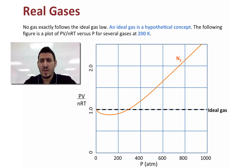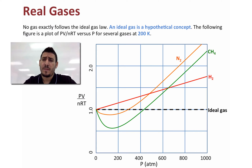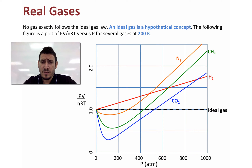Let's first start with nitrogen and we can see that the curve of nitrogen is far away from being ideal. The same thing we can do with hydrogen, methane, and carbon dioxide. So none of these gases is behaving ideally when we look at their curves.